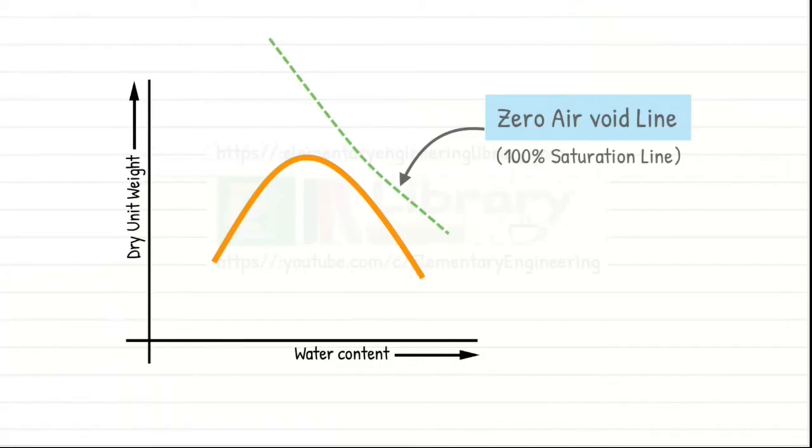We must keep in mind that this curve or line representing 100% saturation is a theoretical limit and is never reached in practice. It may also be noted that the maximum dry density attained even in the modified proctor test is lower than the theoretical maximum dry density, indicated by zero air void line.